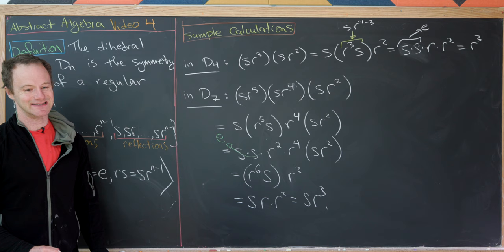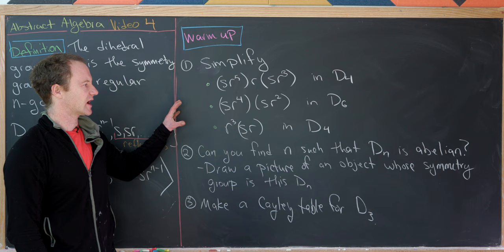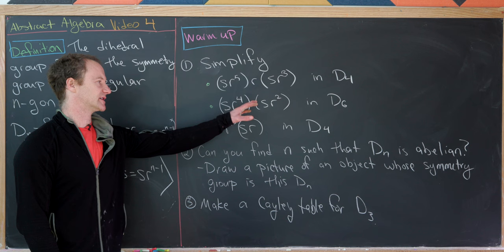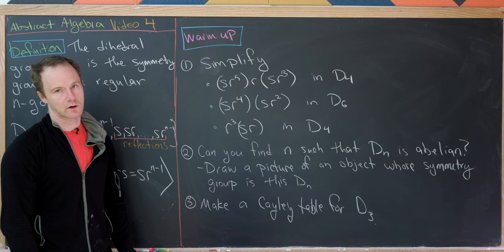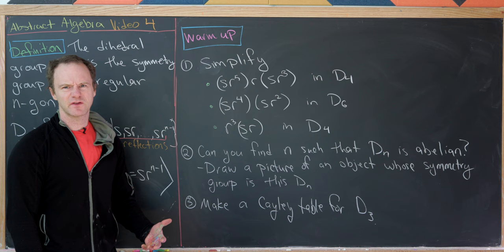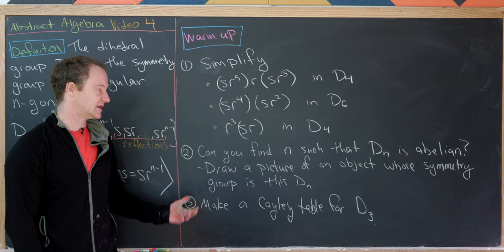I'll leave you with three warm-up exercises. First, simplify: (a) sr⁵·r·sr³ in D4, (b) sr⁴·sr² in D6, and (c) r³·s·r in D4. Second, find all n such that Dn is abelian — hint: there are two. Third, draw a picture of an object whose symmetry group is that Dn. Finally, make a Cayley table for D3.